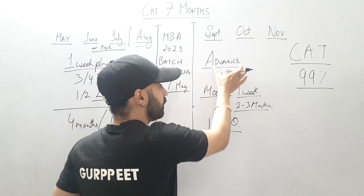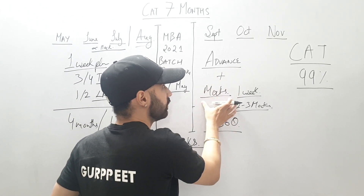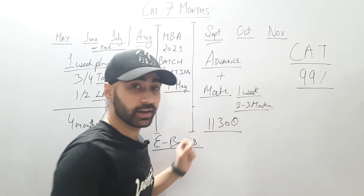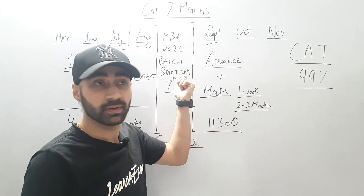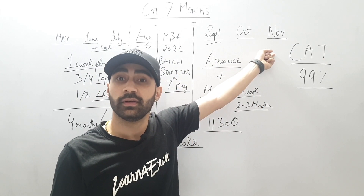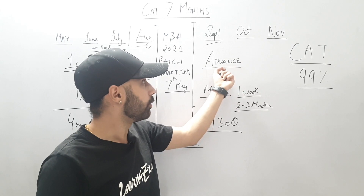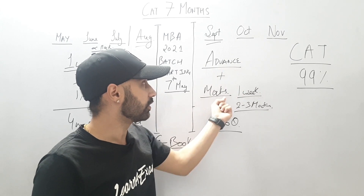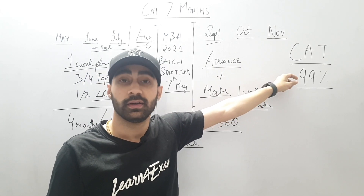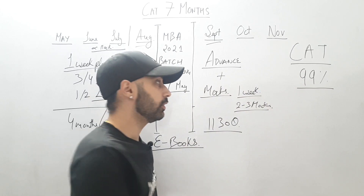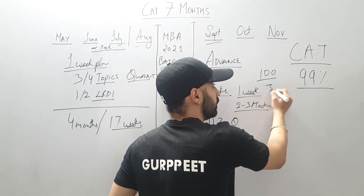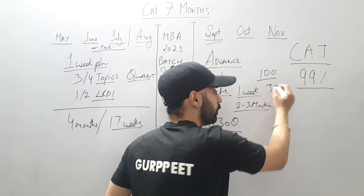From here on, you do advanced practice and mocks — you don't even need my advice after that. If you've completed the syllabus in these four months, you know how to go from here. Just keep doing advanced practice and giving mocks, and you will reach 99 percentile.